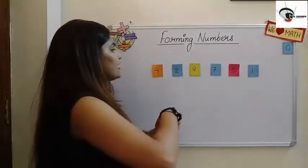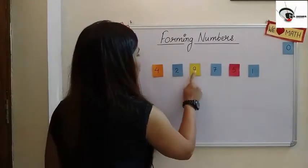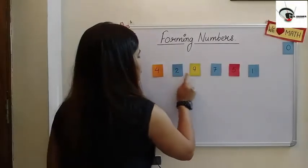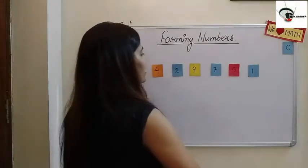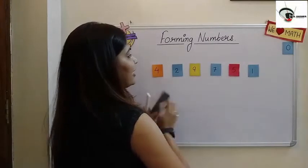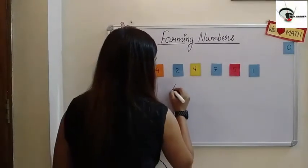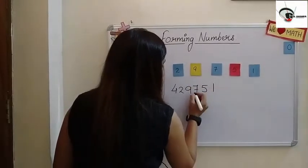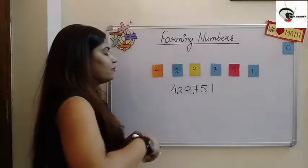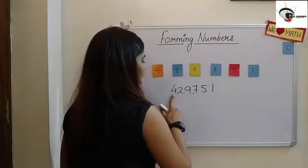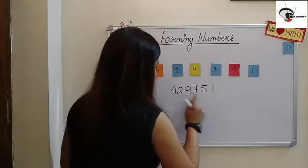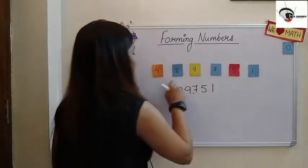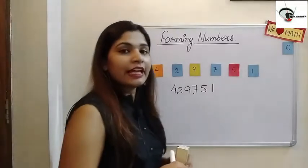I have six digits over here: four, two, nine, seven, five, and one. These are known as digits. If I combine all these digits together, it will form a number. If I write it down according to the Indian national system, it will be read out as four lakh twenty-nine thousand seven hundred and fifty-one.